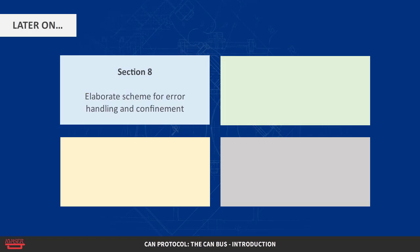The CAN standard also defines an elaborate scheme for error handling and confinement, which is described in more detail in Section 8, CAN Error Handling.